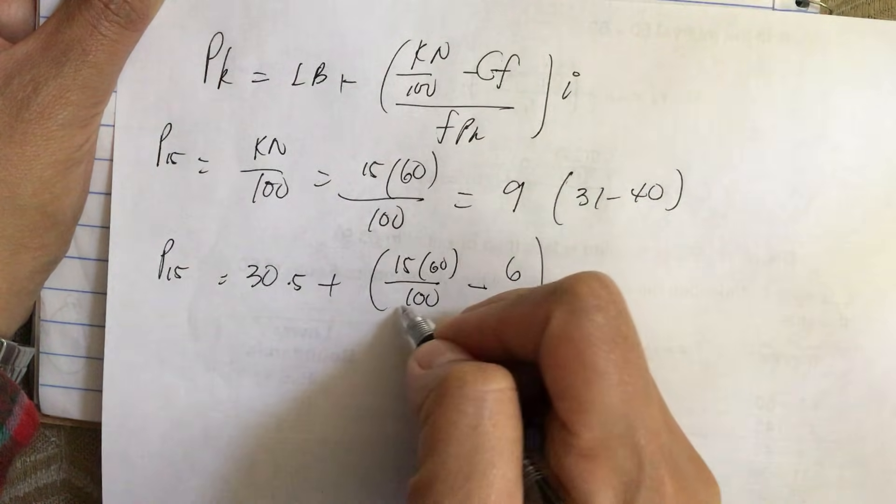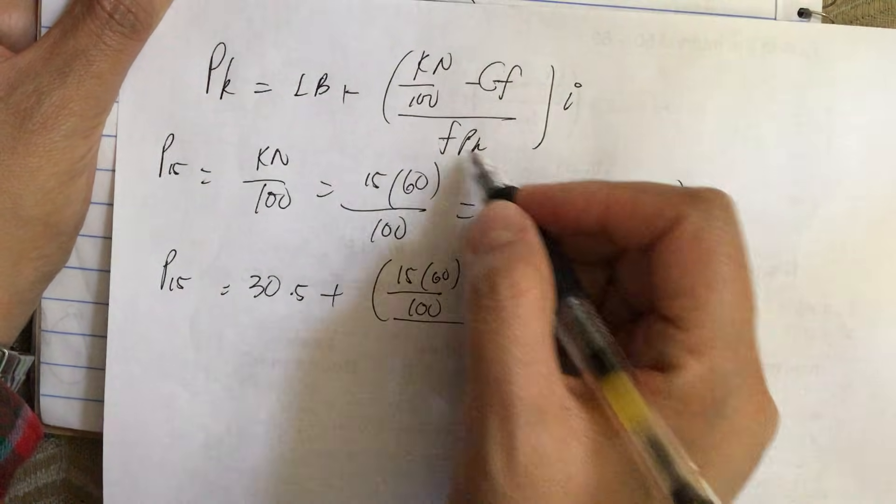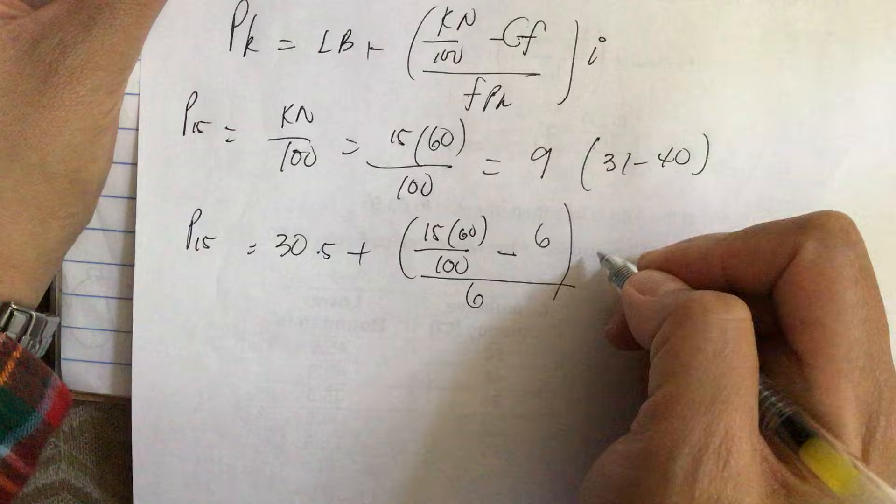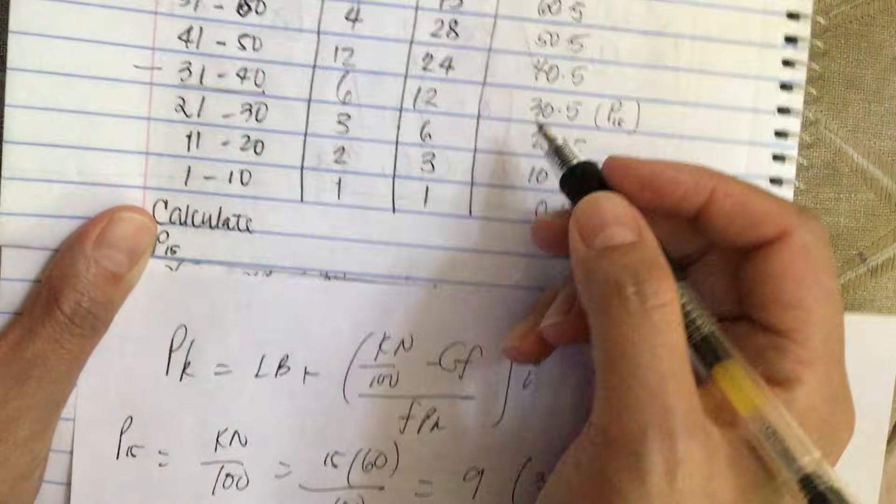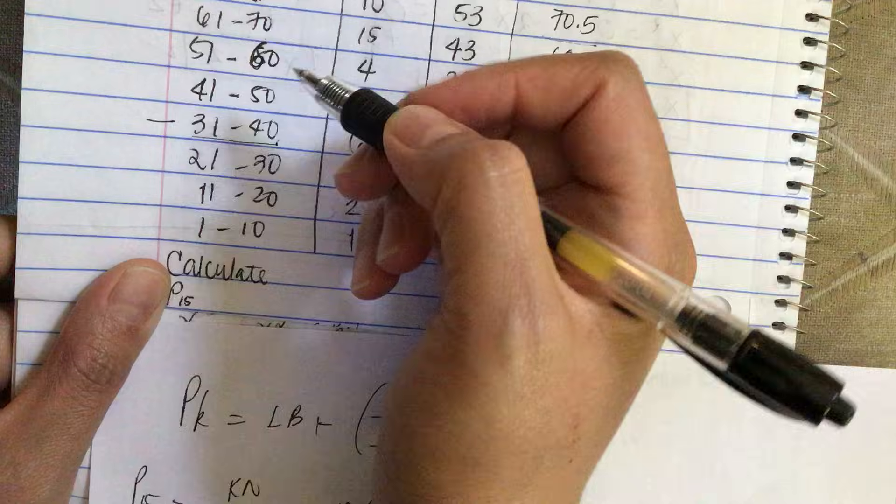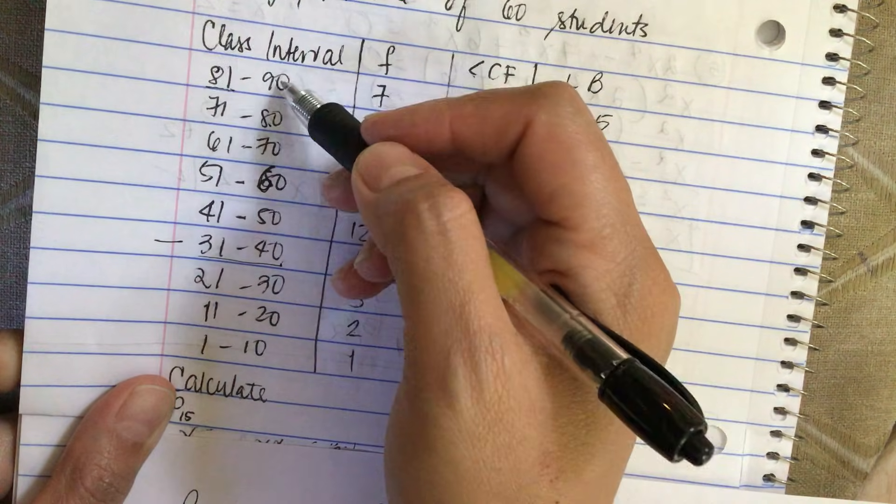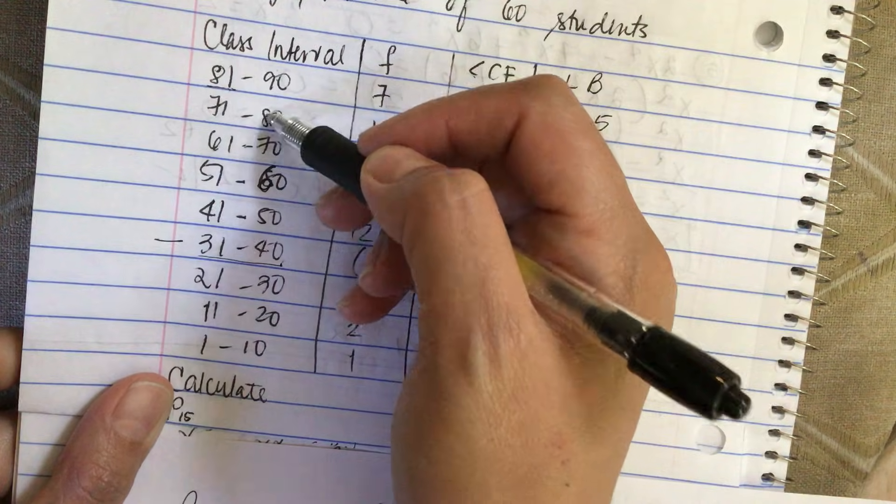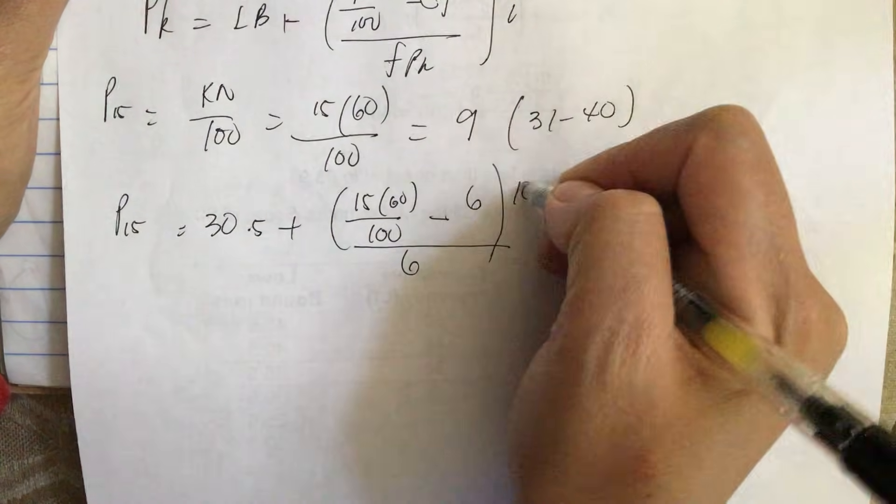Now this is all over the frequency of P_k which is 6, and then multiply by i, the size of the class. And it's 10. So 90 to 80 is 10, 70 to 80 is 10, so class interval is 10.